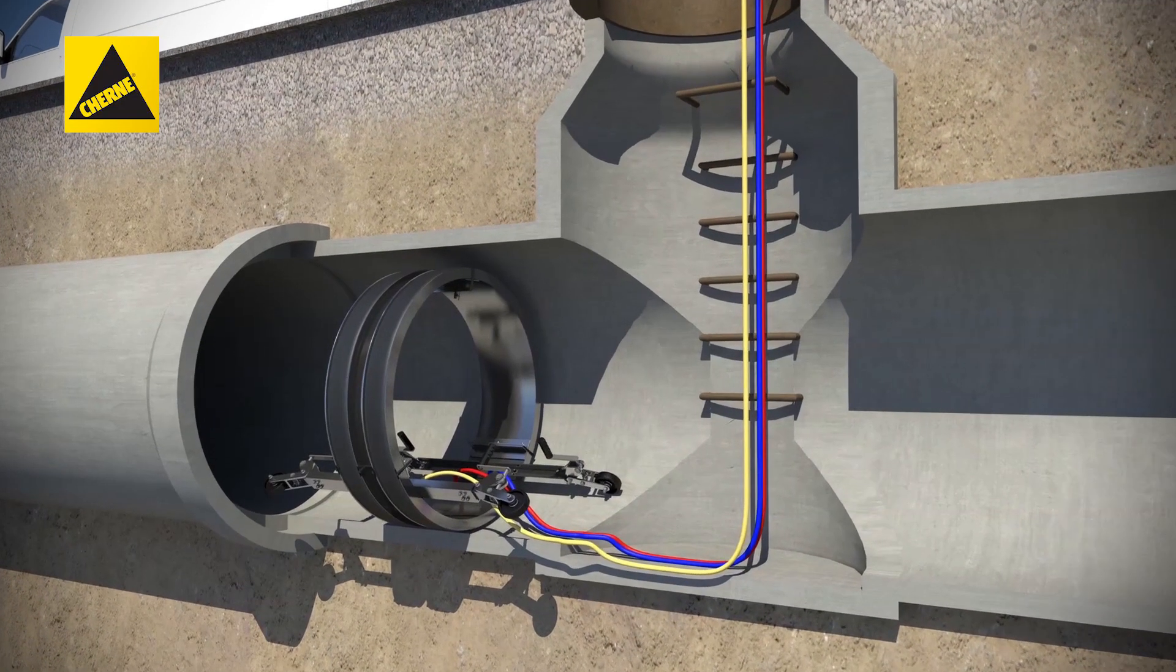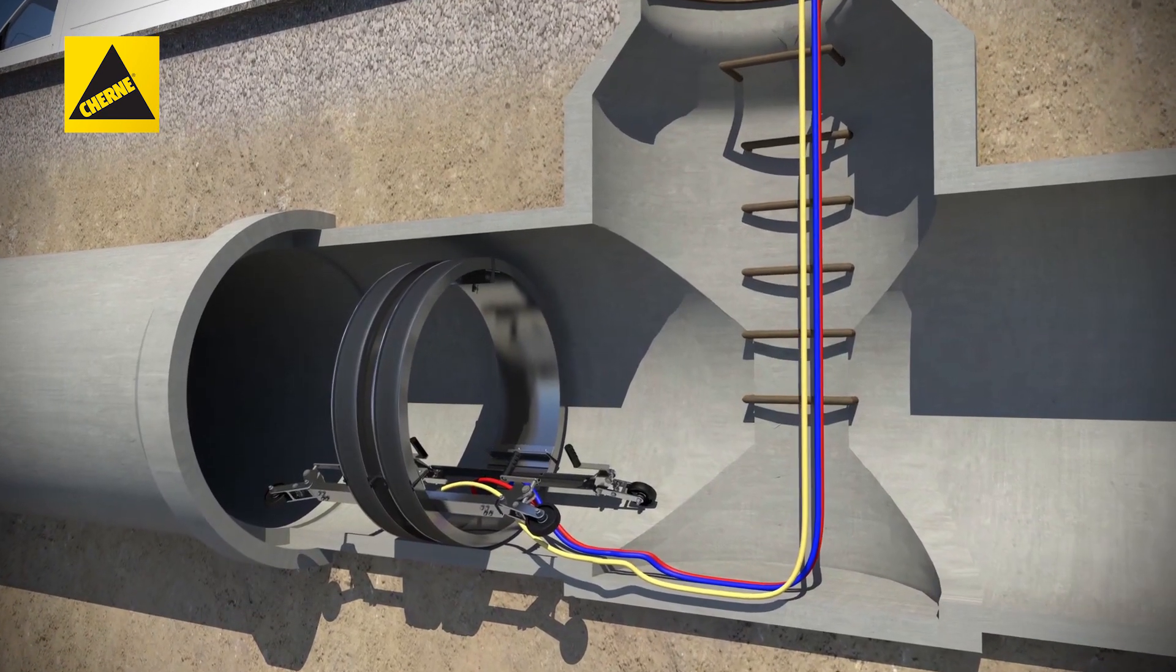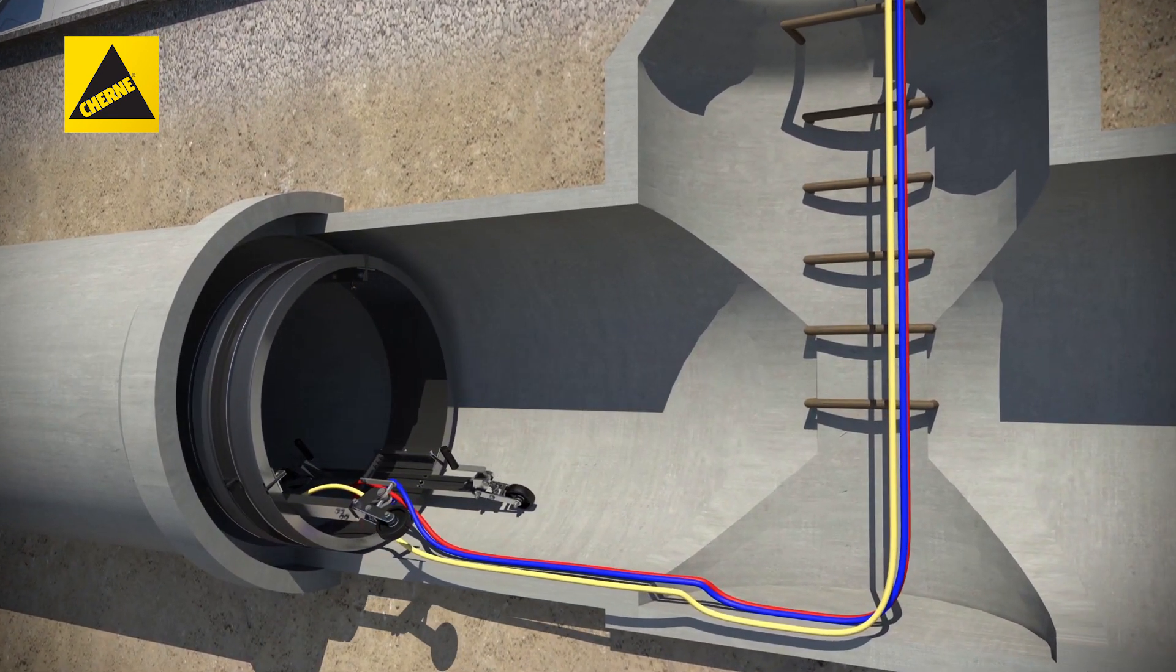Step 1. Once completely assembled and inside the pipe, roll the joint tester to the first joint to be tested.